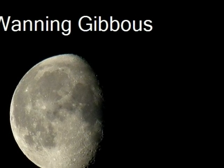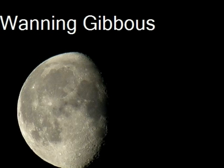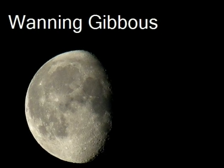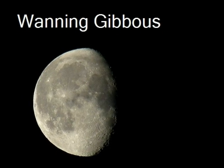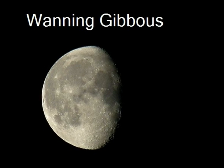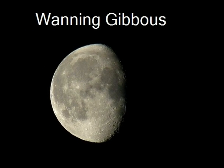Next, we will look at a waning gibbous. Waning means that the lit portion of the Moon is decreasing. Therefore, a waning gibbous is a more than half lit Moon where the lit portion is lessening.